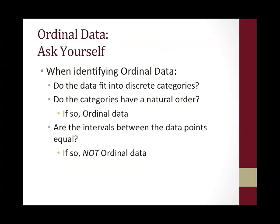When you think you may have ordinal data, ask yourself a few questions. Do the data fit into discrete categories — same question we asked for nominal data — but do those categories have a natural order? If they do, you may have ordinal data. Are the intervals between the data points equal? If they are, that's not ordinal data — that's our next level, interval ratio. But if you can't see that there are equal data points, then you may have ordinal data.